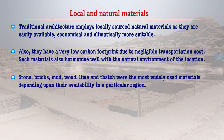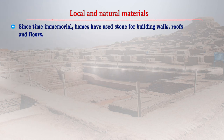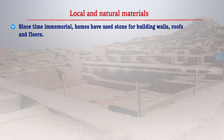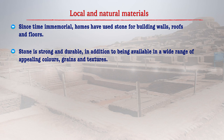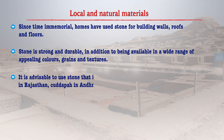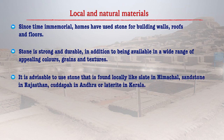The materials most widely used were stone, bricks, mud, wood, lime and thatch, depending upon their availability in a particular region. In construction, stones were used for building walls, roofs and floors. Stone is strong and durable, available in a wide range of appealing colours, grains and textures. It was advisable to use stone especially in the hilly regions of Himachal, sandstone in Rajasthan, and different types of stones were selected according to the nature of the soil.